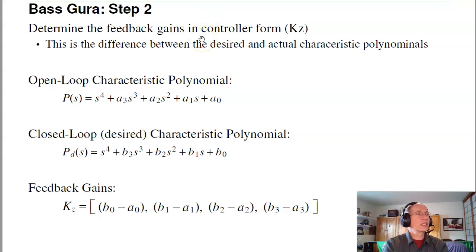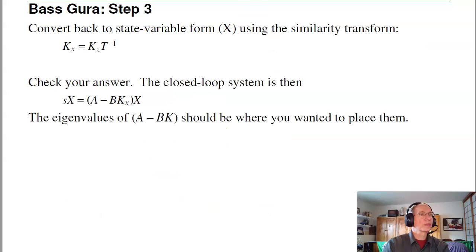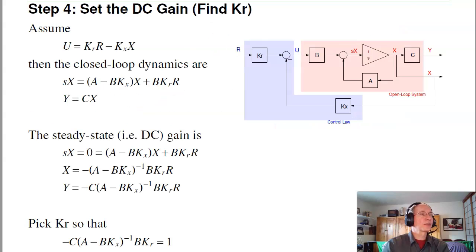So that's the first step of Bass Gura: Convert to controllability canonical form. The second step is find the feedback gains KZ that place the closed-loop poles where you want. And from before, that's just the difference in the two characteristic polynomials. Take the current characteristic polynomial of the open-loop system. Take the desired characteristic polynomial. The feedback gains are just the difference between the two. The last step is, I know KZ, I want to know KX. Do a change in variable, convert from Z to X. And that'll just be that KX is KZ times T inverse. Finally, as a check, just to make sure you did it right, check the eigenvalues of A minus BKX. They should be where you placed them. So that is Bass Gura.